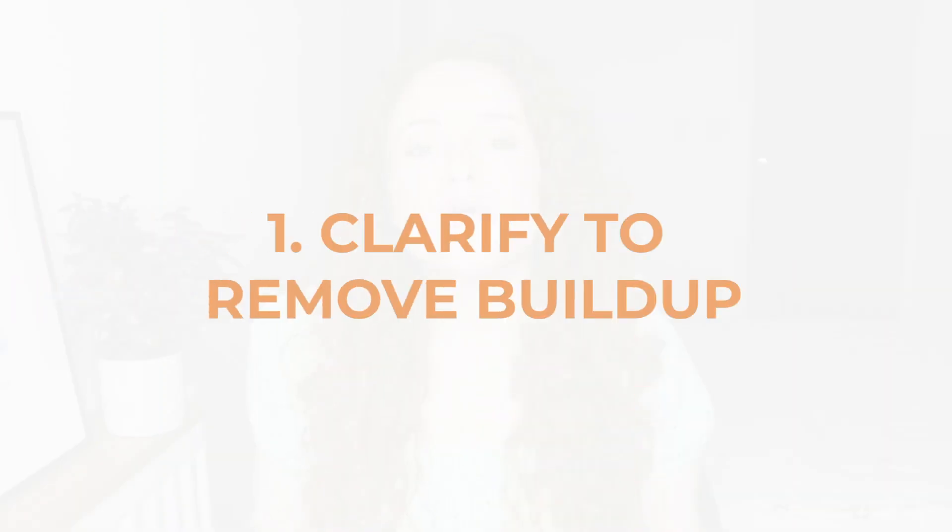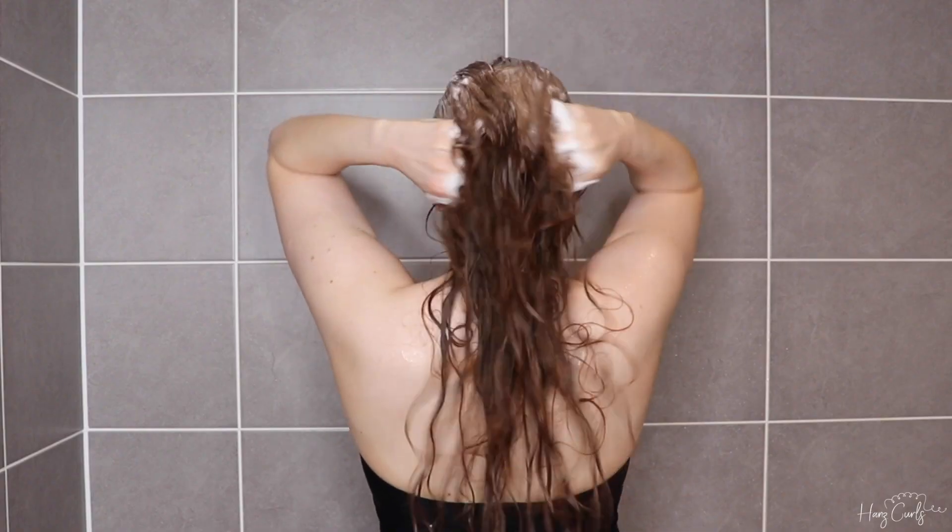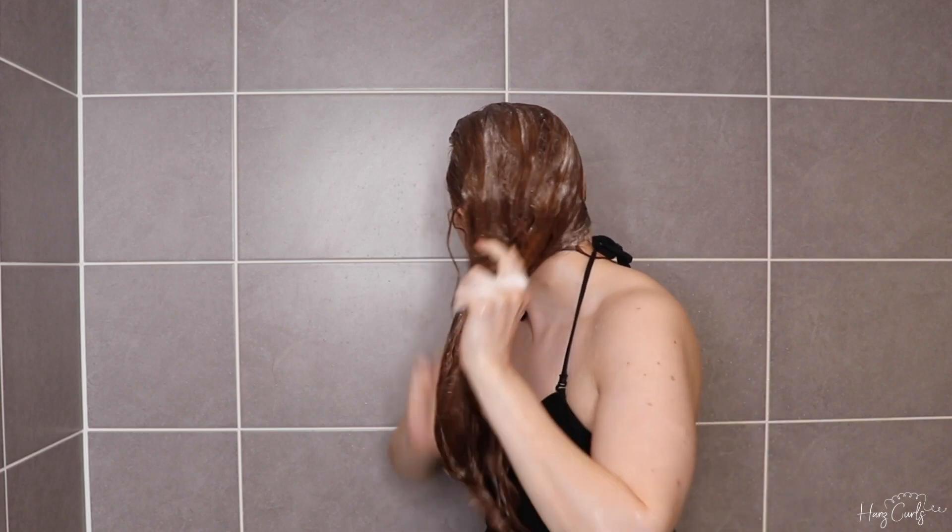Now that we understand why your curls aren't as shiny as you want them to be, I'm going to share some tips to enhance your curls' shine and hydration. Tip number one is to remove product buildup. If you've been using lots of products that build up on your hair, you really need to use a cleanser that can remove that buildup — otherwise your hair can look limp, dull, and lifeless. Make sure you are clarifying your hair regularly if you're using products that can build up.